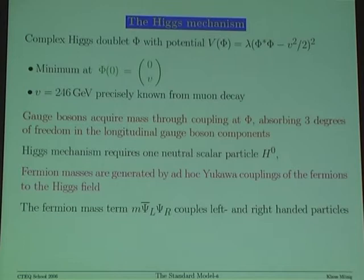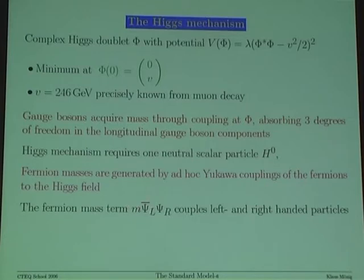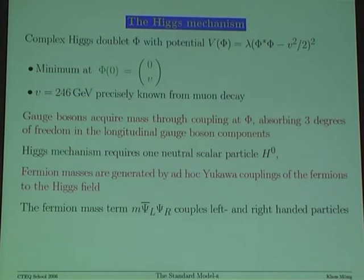You can also generate fermion masses with the Higgs field by writing down Yukawa couplings of the fermions to the Higgs field. The important thing is that a fermion mass term is m × ψ̄_L × ψ_R, coupling left- and right-handed particles to each other. This explicitly shows how a mass term breaks the symmetry you started with, since you mix the SU(2) doublet structure of left-handed fermions with the singlet structure of right-handed fermions.